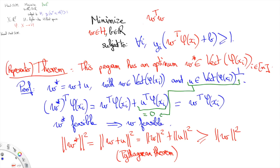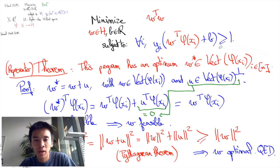W has a better or equal objective value as W star, and since it is also feasible we know that W is an optimum and it is a linear combination of the phi of XI.